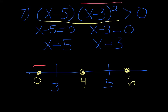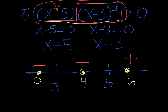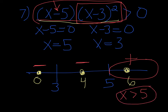The squared term is always going to be positive, so you only need to check the x minus 5. Put 4 in: 4 minus 5 is negative 1, that's negative times a positive, so again it's negative. Put 6 in: 6 minus 5 is positive, the other one's positive too, so that one's going to be positive. The question is when is this whole thing greater than 0? The answer is x is greater than 5, because all the numbers greater than 5 make this expression positive.